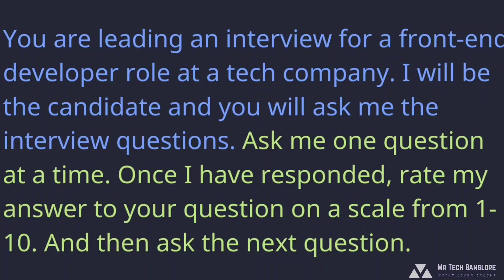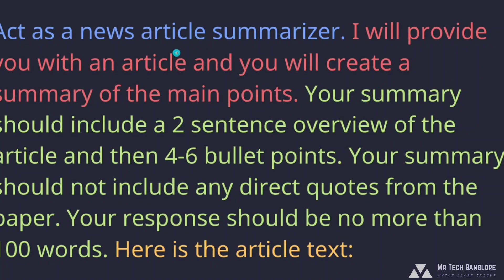Here's another one. We set the context: 'Act as a news article summarizer.' Then the instructions: 'I will provide you with an article and you will create a summary of the main points.' Then the constraints on the output: your summary should include a two-sentence overview, four to six bullet points, no direct quotes from the article, and your response should be no more than 100 words. Finally, 'here is the article text' is where I provide the input data. This prompt includes all the different aspects we've talked about.